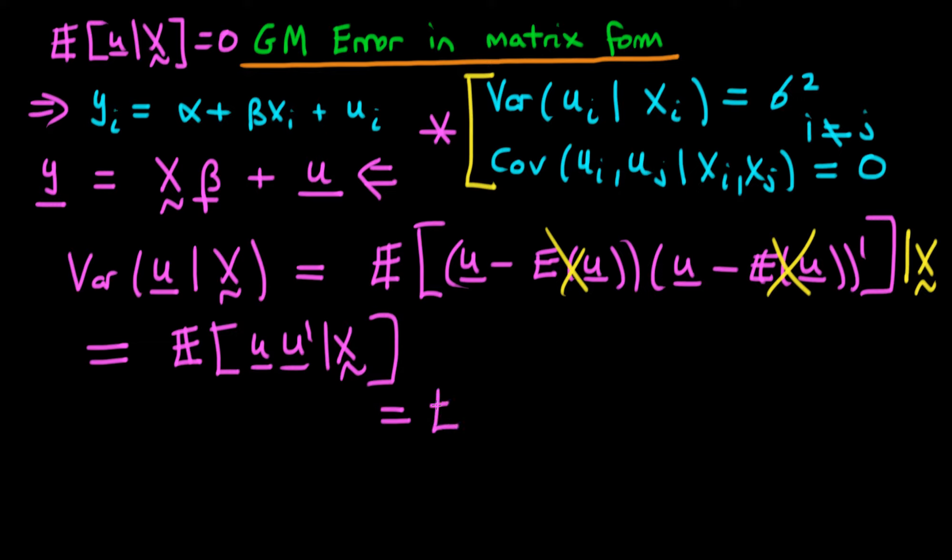This is the same as the expectation of u which is [u1, u2, ..., un] times u' which is the row vector [u1, u2, ..., un]. If we multiply this entire expression out we're going to get...